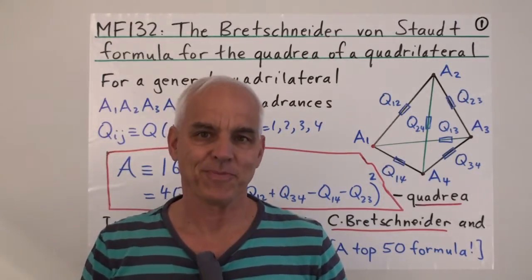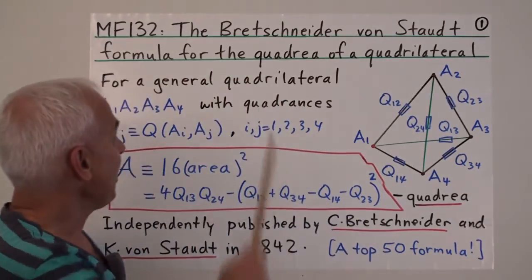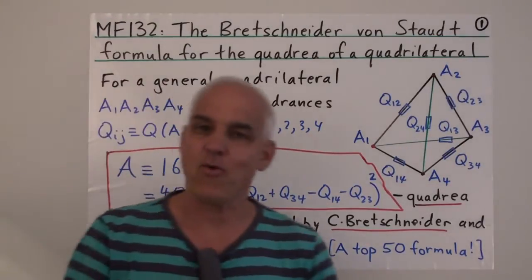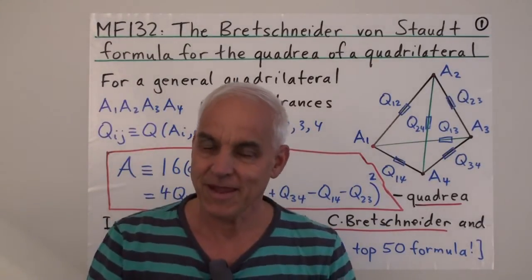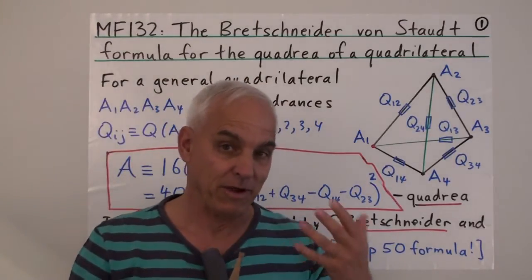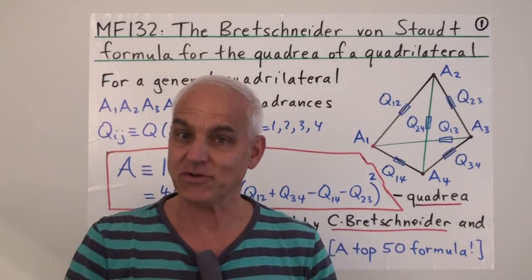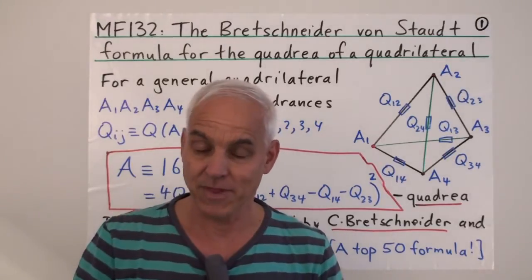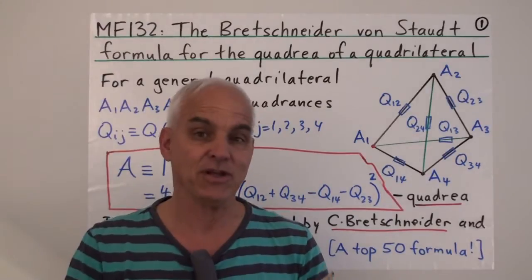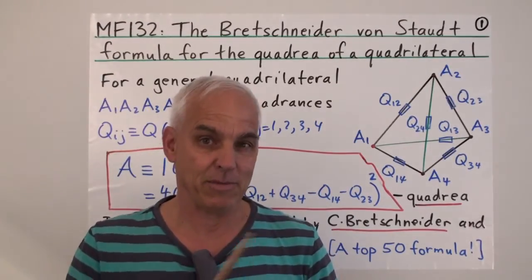Good day, I'm Norman Wildberger. In today's video, we're going to look at the famous formula of Bretschneider and von Staudt for the quadria of a quadrilateral. This is a redo of a video where I talked about this subject but I wasn't really quite as knowledgeable about the history of the subject as I could have been. And thanks to some very useful suggestions and information that I got from viewers, I'm able to redo this video with a little bit more accuracy.